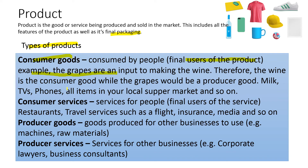Milk, TVs, phones, and all items in your local supermarket are consumer goods. Consumer services are services for the final users — for example, restaurants, travel services such as flights, insurance, media, and social networking. Facebook, for example, can also be a producer service as well.